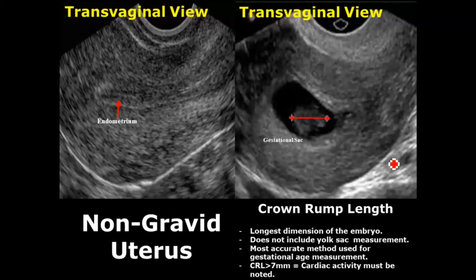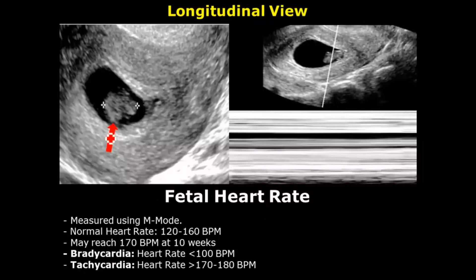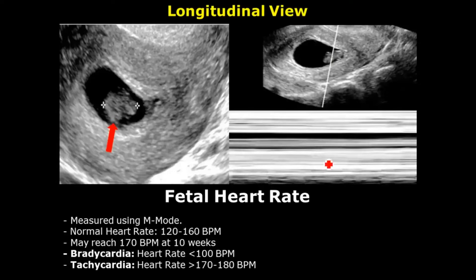If the CRL is more than 7 millimeters, cardiac activity should be noted. Fetal heart rate can be measured by using M mode. The normal heart rate range is from 120 to 160 beats per minute and it may reach 170 beats per minute by 10 weeks.